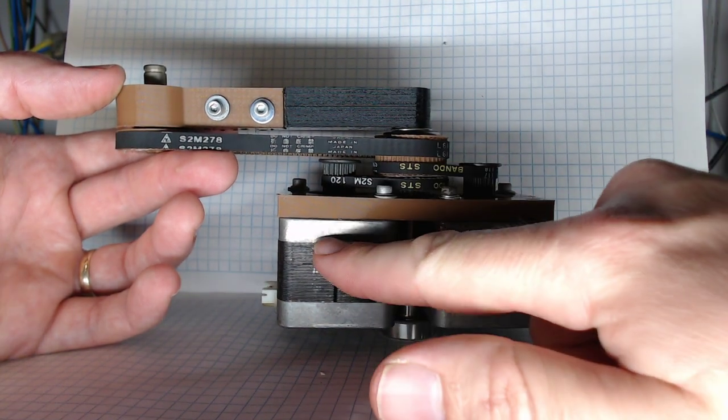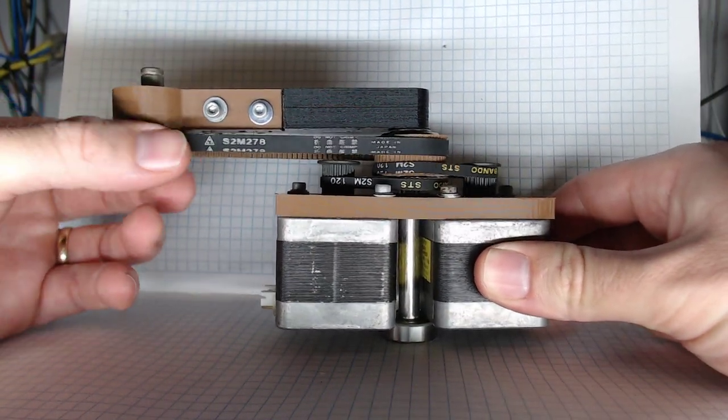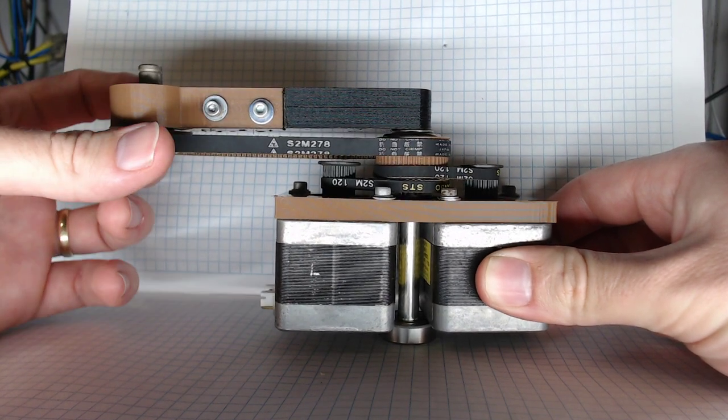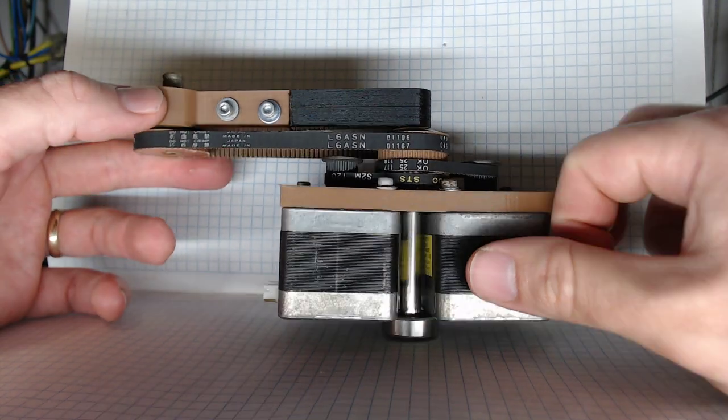And then the stepper that drives the secondary shaft, which in this case is the right one, sorry, the shaft 2, the stepper that drives shaft 2, will do so via shaft 1.